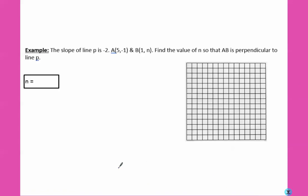And our last example. The slope of line P is negative 2. A, 5, negative 1, and B, 1, N. Given those, find the value of N so that AB is perpendicular to line P. So I'm going to start by drawing some axes in. And they won't be drawn on your graph paper that you get for the SOL, so you'll have to do that as well. We need to be perpendicular. So let's start by making our slope. So our slope currently is negative 2 over 1. Our perpendicular slope, we need to flip the fraction over. And because this one was negative, our perpendicular slope will be positive. So that's the slope we're going to use.